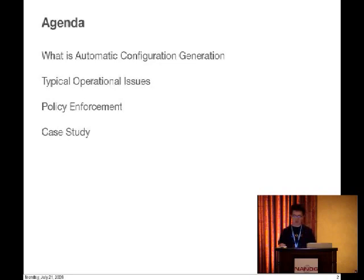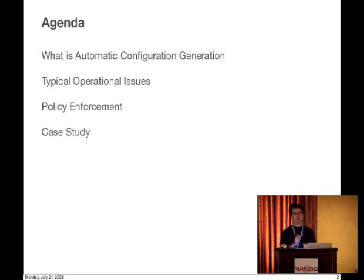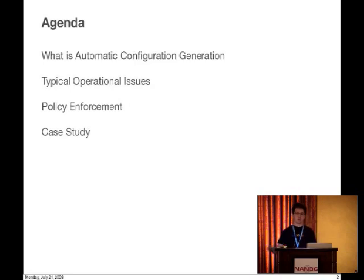Everyone wants an orderly network, but the problem is that you already have a network. So you need to figure out how to get there from here. One way that people commonly take is to pick an individual router and start trying to write a generator that'll generate that config, figuring changes from here on will have to go through the generator. It doesn't work, because the nature of networks is that they're tied into everything else. There's no way to slice it based on one router — you have to slice it across. You solve one class of problems: the problem of duplicate IP addresses, or of incomplete IBGP mesh, or whatever other class of problems you want to solve. But you have to pick one and slice it across.